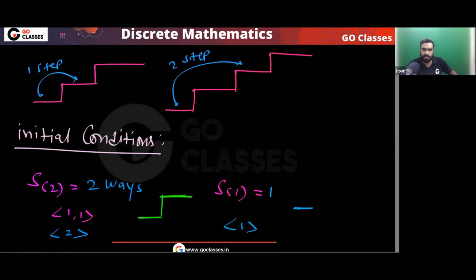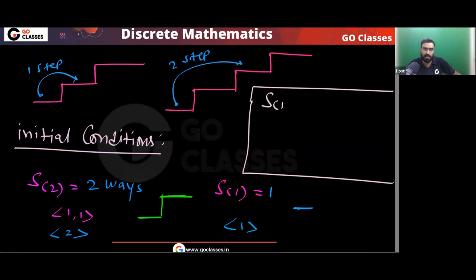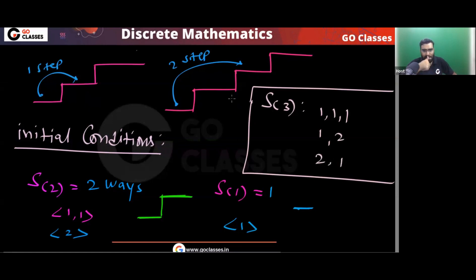Let's find S3 — you have three stairs. Either you can take 1,1,1, or first one step then two steps, or first two steps then one step. So S3 equals 3. Now let's solve for any number of steps — we want the recurrence relation.